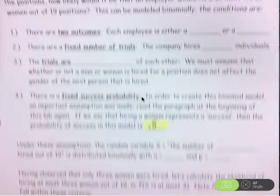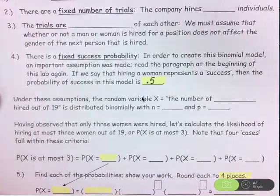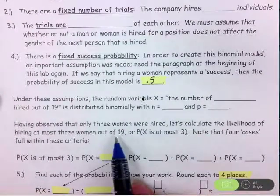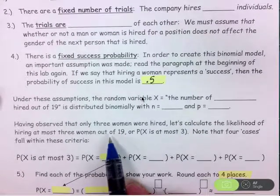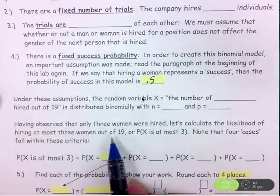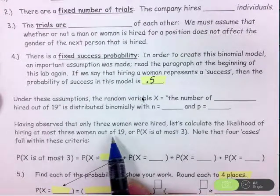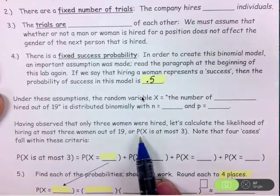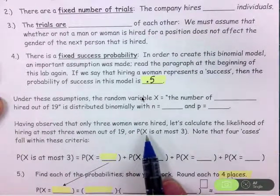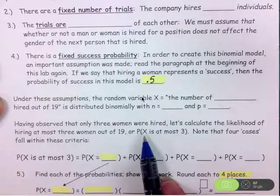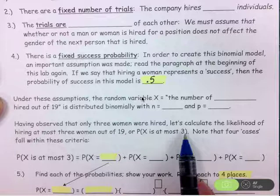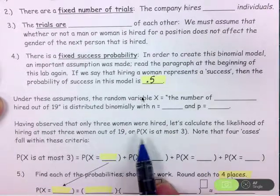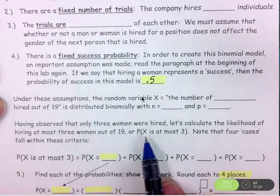Now, understand, in this context, we're assuming that we've hired 19 people, but we've observed that only three of them were women. So is that unusual? Is that out of the ordinary if there are an equal number of fully qualified men and women? So we're interested in finding this likelihood. What's the probability that x, x being the number of women hired out of 19, what's the probability that that is at most 3?